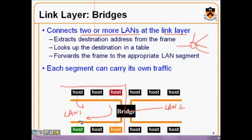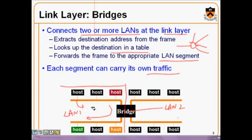If a host sends a packet whose destination also resides in LAN 1, the bridge will not forward this packet to LAN 2, because it knows the destination of this particular frame is in LAN 1 itself. It looks up the destination in the table and forwards the frame to the appropriate LAN segment. Each segment can carry its own traffic, reducing the probability of collision.